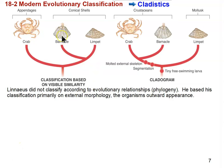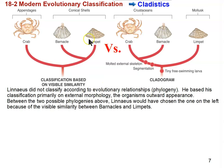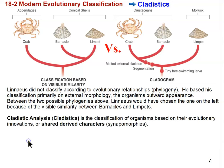So if he were to consider the classification of these three species, which one of these two phylogenetic trees do you think he would choose? Well, it turns out it would be this one, because barnacles and limpets look so similar to each other in their outward appearance. Modern taxonomists rely on cladistic analysis, or cladistics, which is classifying organisms based on their evolutionary innovations or shared derived characters, also known as synapomorphies.